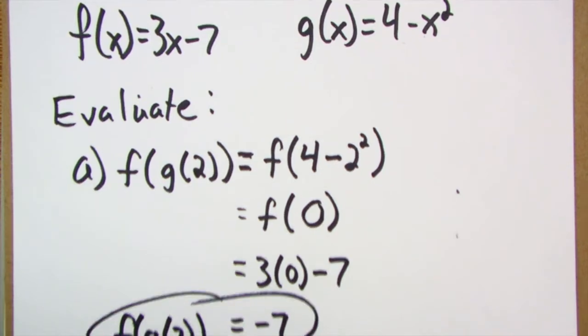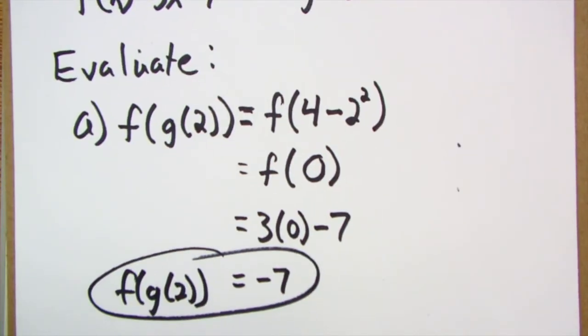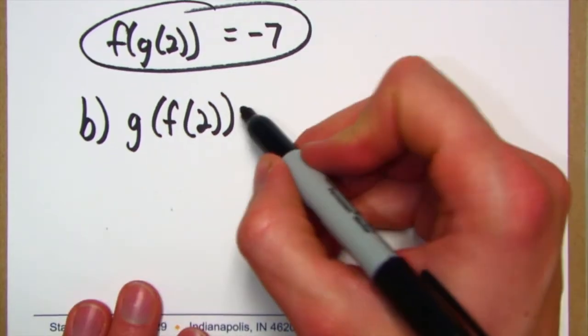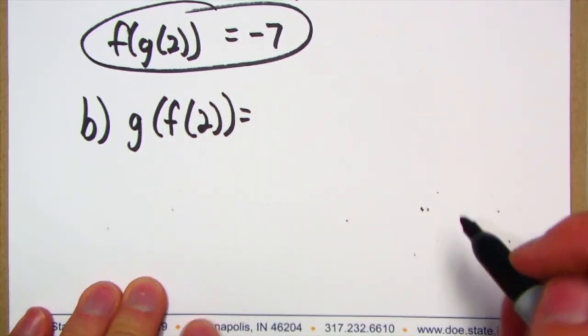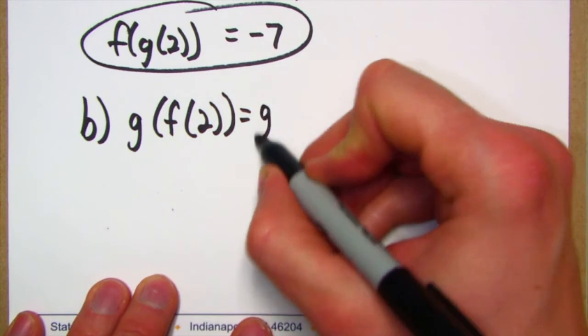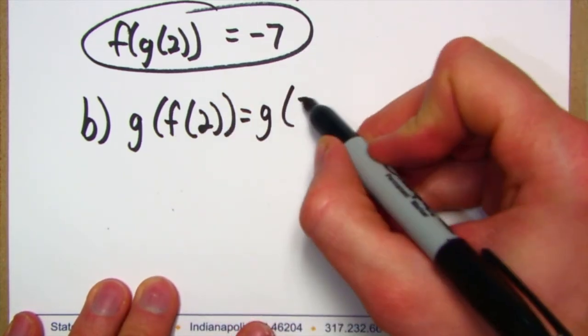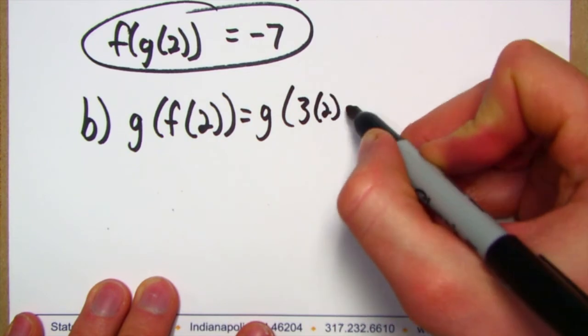Try it, see what you get: g of f of 2. All right, when we do g of f of 2, we're going to have g of... all right, f of 2 is 3 times 2 minus 7.